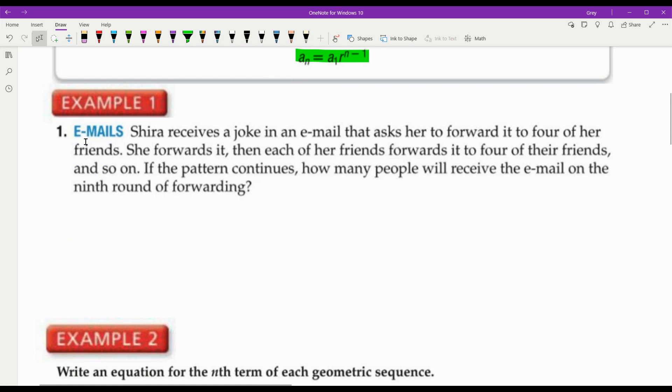In our first example, Shira receives a joke in an email that asks her to forward it to four of her friends. She forwards it, then each of her friends forwards it to four of their friends, and so on. If the pattern continues, how many people will receive the email on the ninth round of forwarding? One of the things you've got to pay attention to is how many were forwarded in the first round. Got to make sure you know what that first term is. She got it. That means that the first round of forwarding is when she sent it to four people. Then if each of those four people sent it to four people, that would be 16, and so forth and so on, multiplying by four every time.